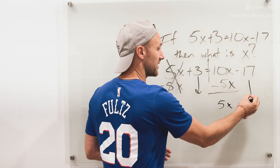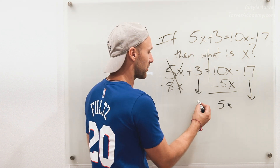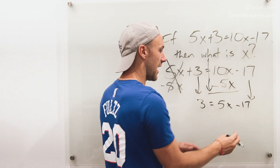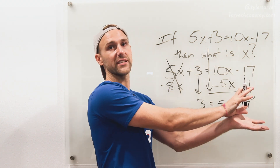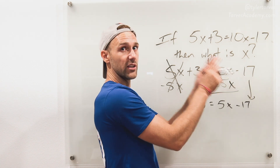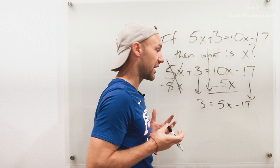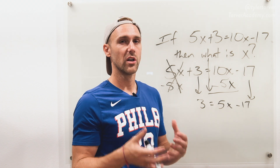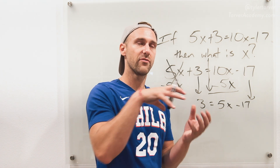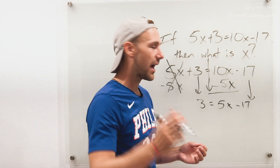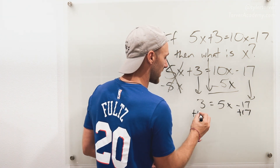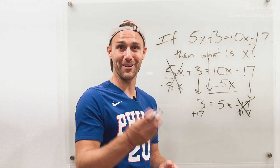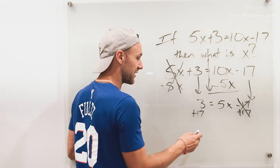I'm going to bring everything else down because I don't want to forget about it. I've got a positive 3, my equal sign, 5x, and then negative 17. Now I've chosen my side for my x's — it's on this side of the equal sign. So I need to get my numbers over to the other side. How do I get rid of a negative 17? I've got to make it 0. The opposite of subtracting 17 would be adding 17, so I'm going to add 17 to both sides. Negative 17 plus 17 is 0, so that cancels it out. And 3 plus 17 is 20.